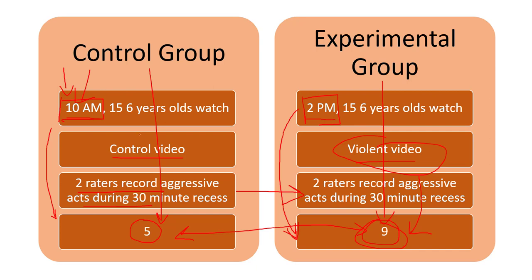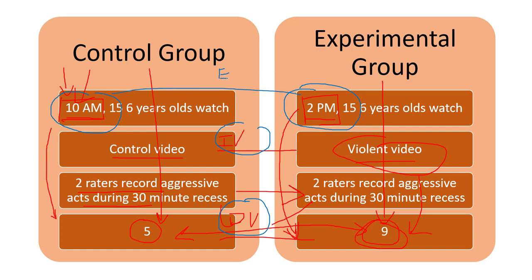In general, the time of day is an extraneous variable — a variable outside of our two variables, the independent variable and the dependent variable. This extraneous variable co-varies with the level of the independent variable: subjects who get the violent video always get it at 2 p.m., and subjects who get the control video always get it at 10 a.m. That's co-varying — they go together.